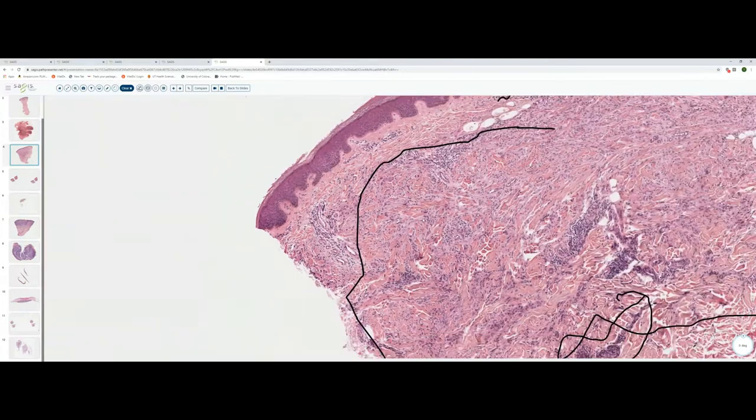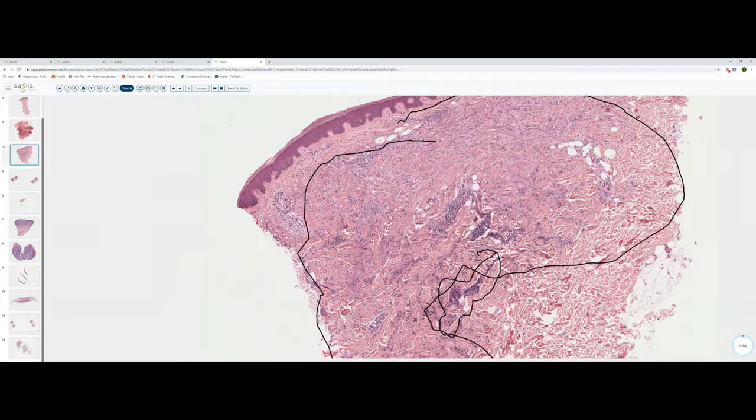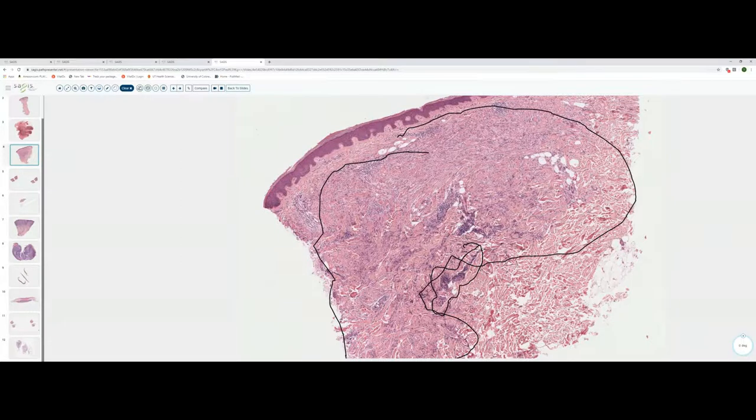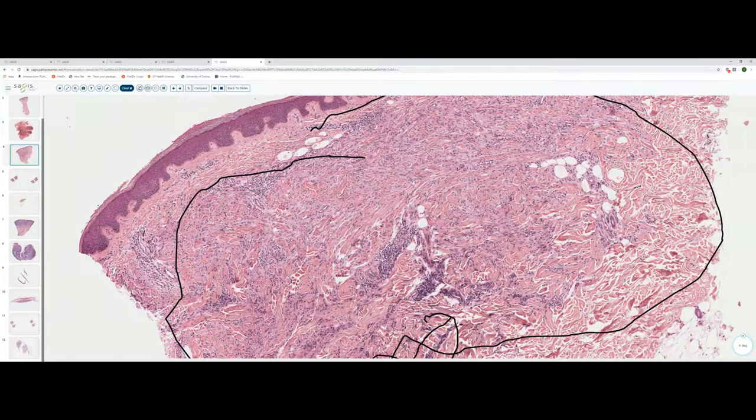Granuloma annulare can occur in a couple of different forms. Actually, you can get subcutaneous GA, but typical GA when it involves the dermis can give you either a distinctive palisade, where the histiocytes are arranged around collagen bundles that are separated from one another by mucin, or you can get an interstitial variant where you just get the histiocytes positioned between collagen bundles without a true palisade. A lot of times you'll get a mixed picture, and in a given biopsy you might see a bit of the palisade and in another area the histiocytes located interstitially between collagen bundles.